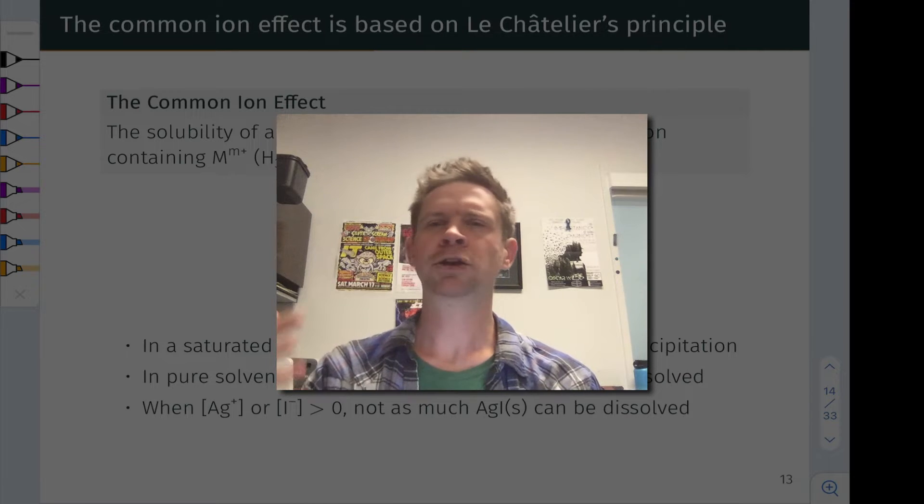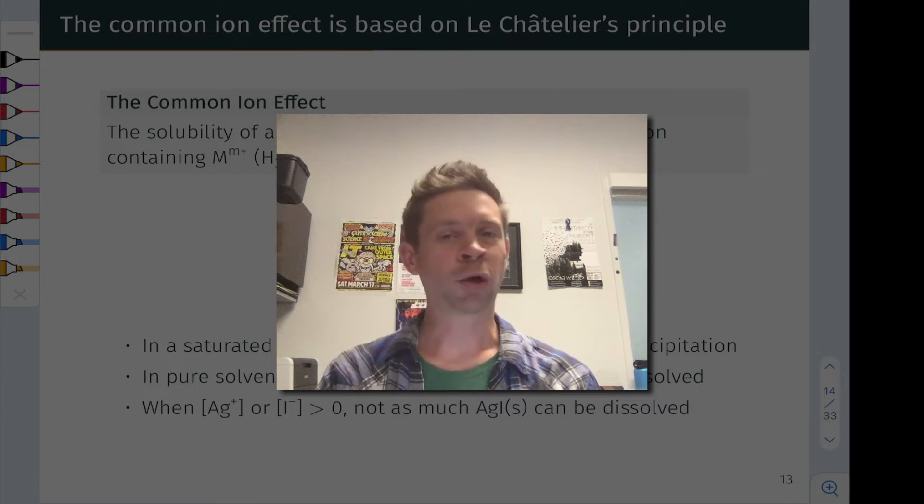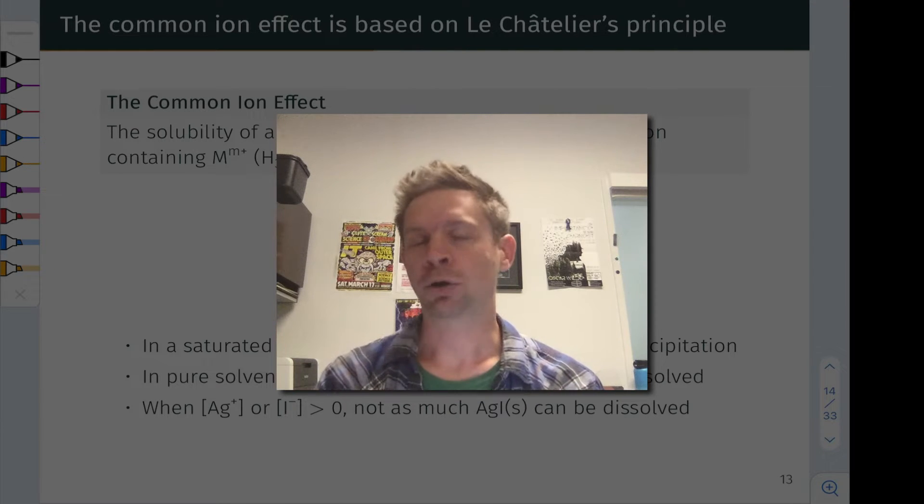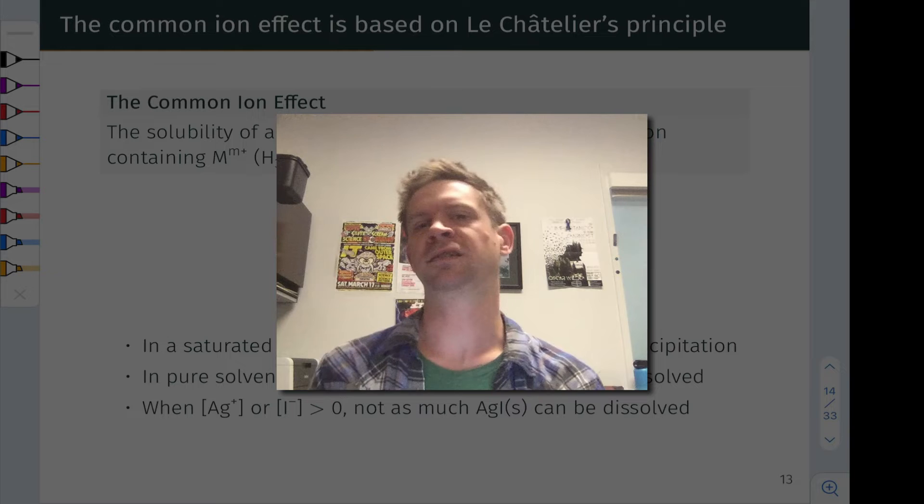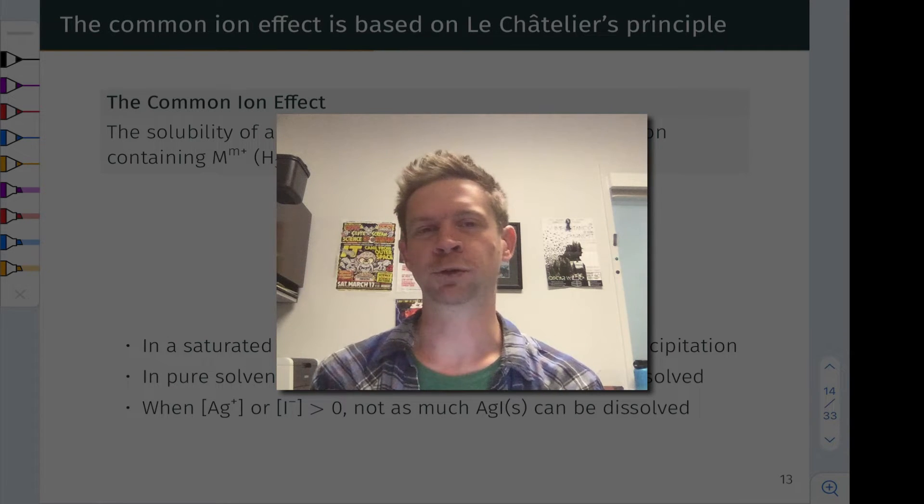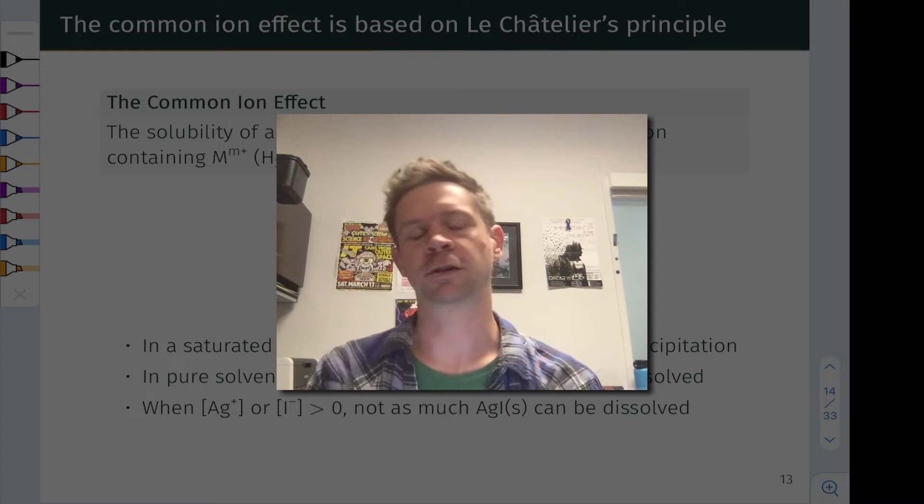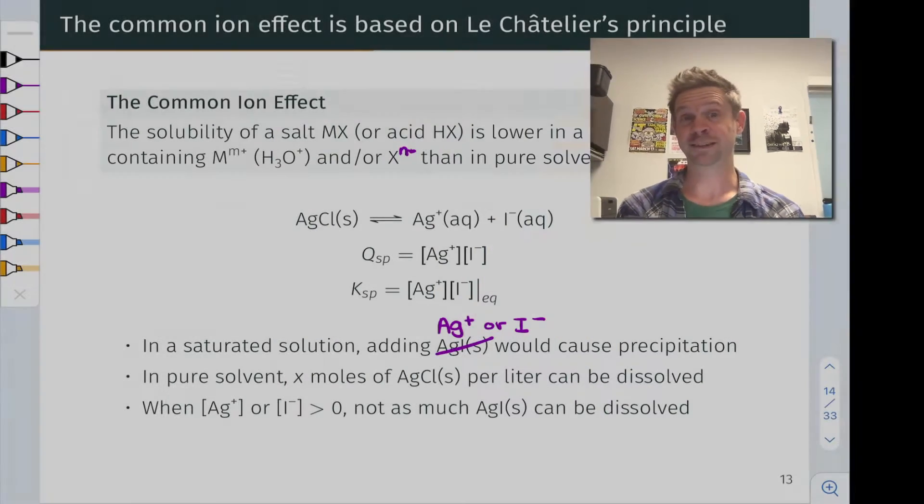In many ways, we already know how to do calculations and make qualitative predictions of how common ions will operate. But we're going to look at some examples in this video and formalize things a little bit more, contextualize things in the context of solubility equilibria using terminology like ion products and solubility product. All right, so let's get into it.